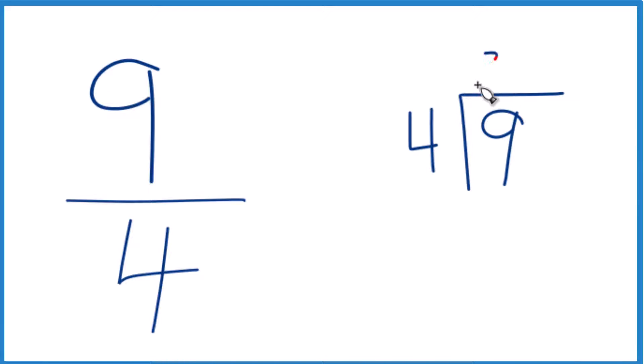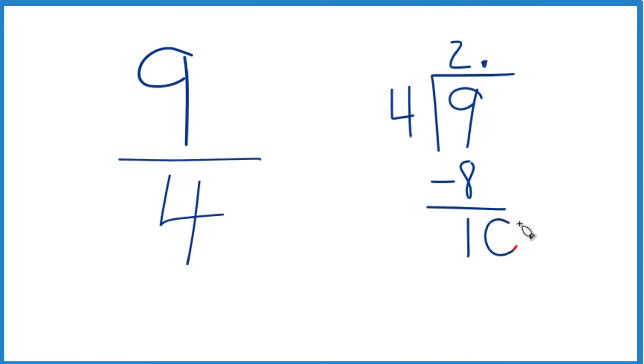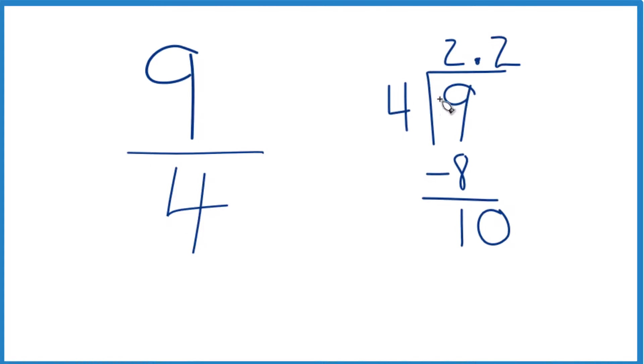So we said two times four, that's eight. Subtract, we get one. Four doesn't go into one, but we could put a decimal point here and call it ten. Two times four, that's eight. Subtract again and we get two.